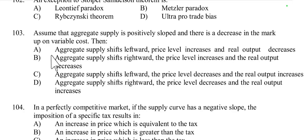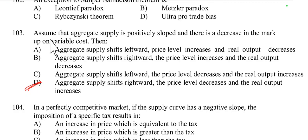Question number 103: Assume that aggregate supply is positively sloped and there is a decrease in the markup on variable cost. Then aggregate supply shifts rightward, the price level decreases, and real output increases. Option D is correct because a decrease in markup on variable cost reduces the cost of production for firms, which increases aggregate supply, shifting it rightward — price level decreases and real output increases.